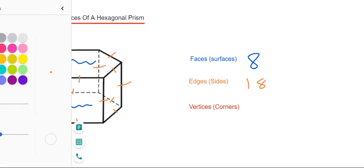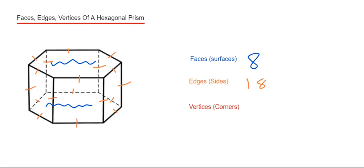And then finally, we've just got to do the vertices. The vertices are the corners of the shape. These are the sharp bits.